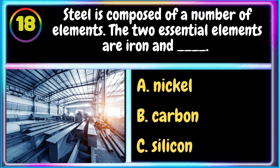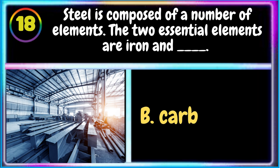18. Steel is composed of a number of elements. The two essential elements are iron and: A. Nickel B. Carbon C. Silicon. B. Carbon is the correct answer.